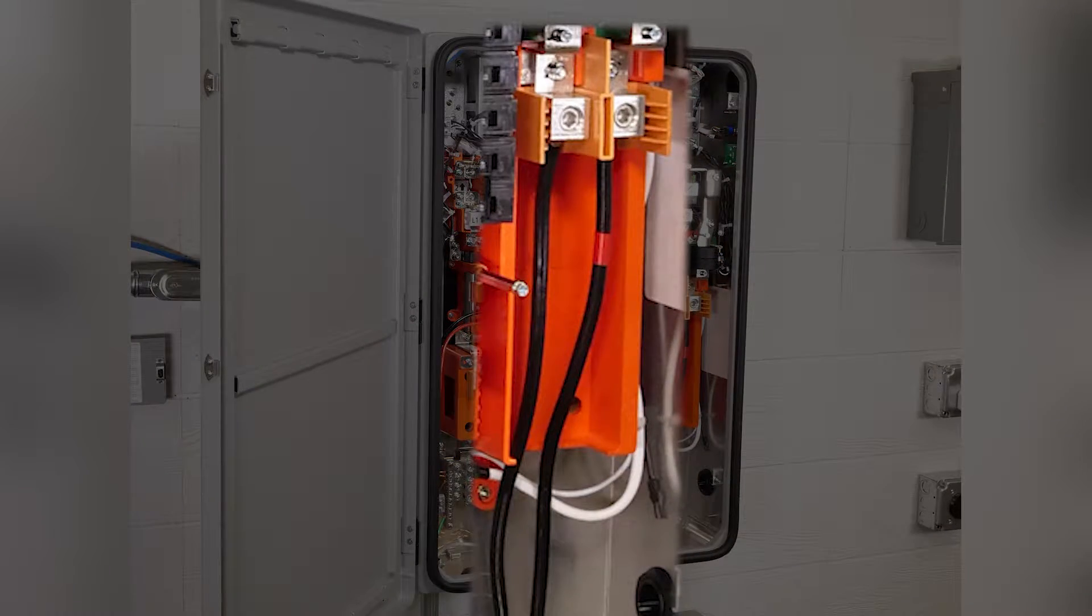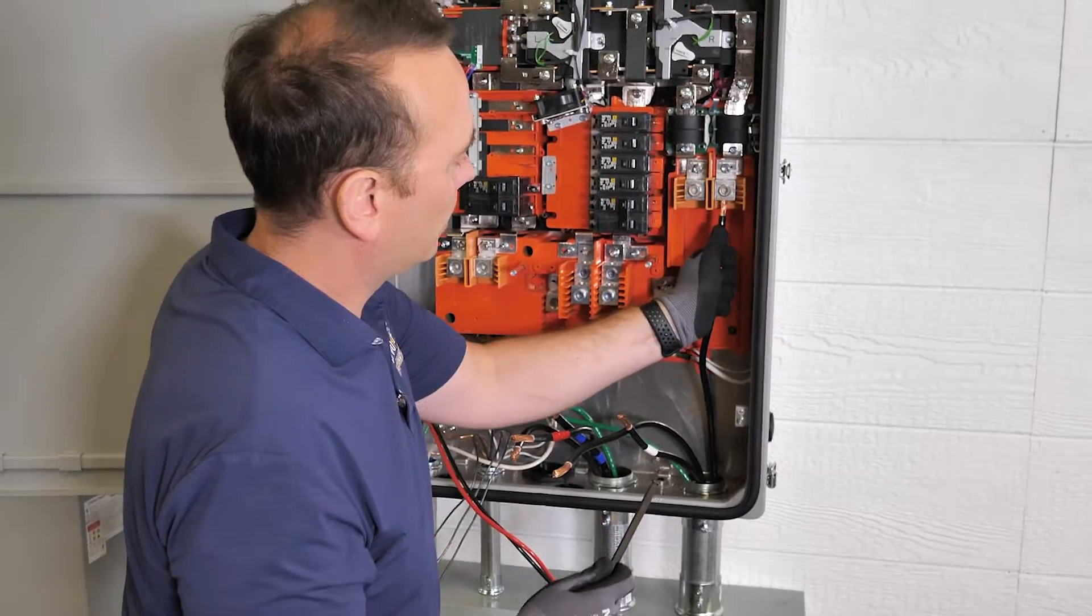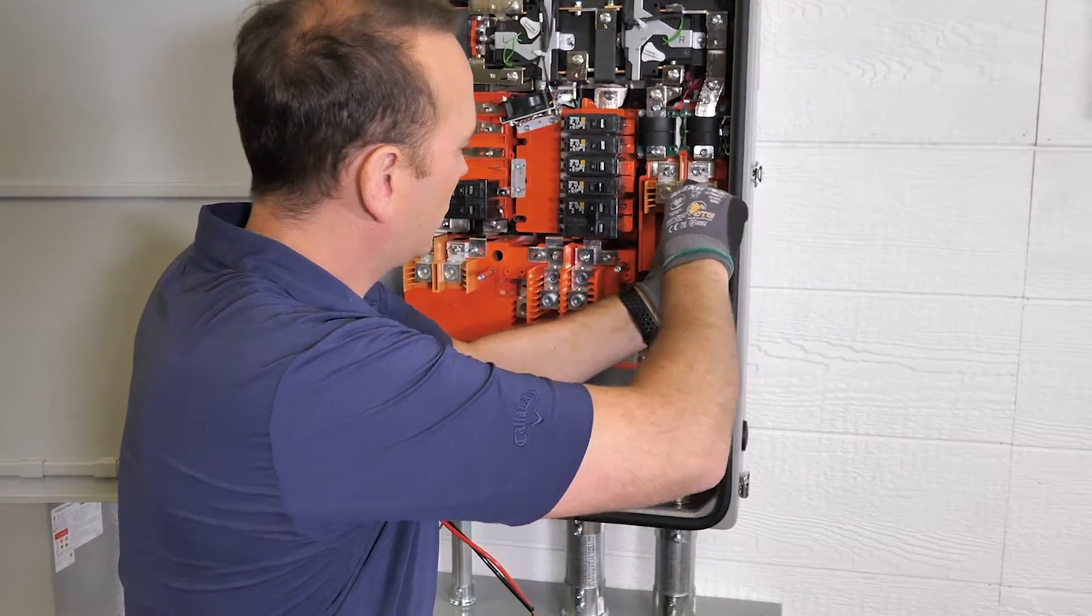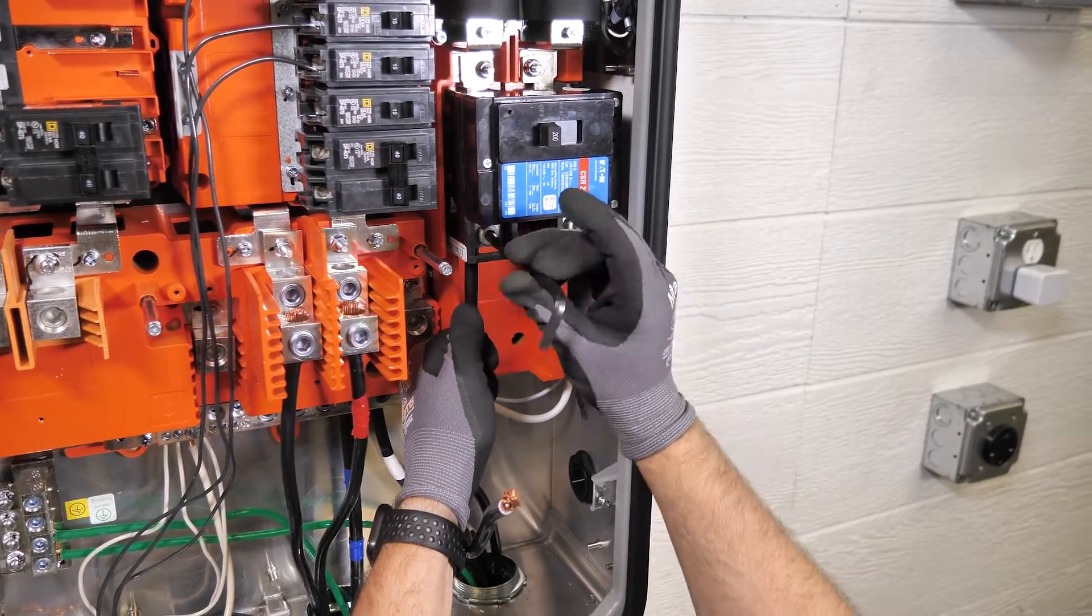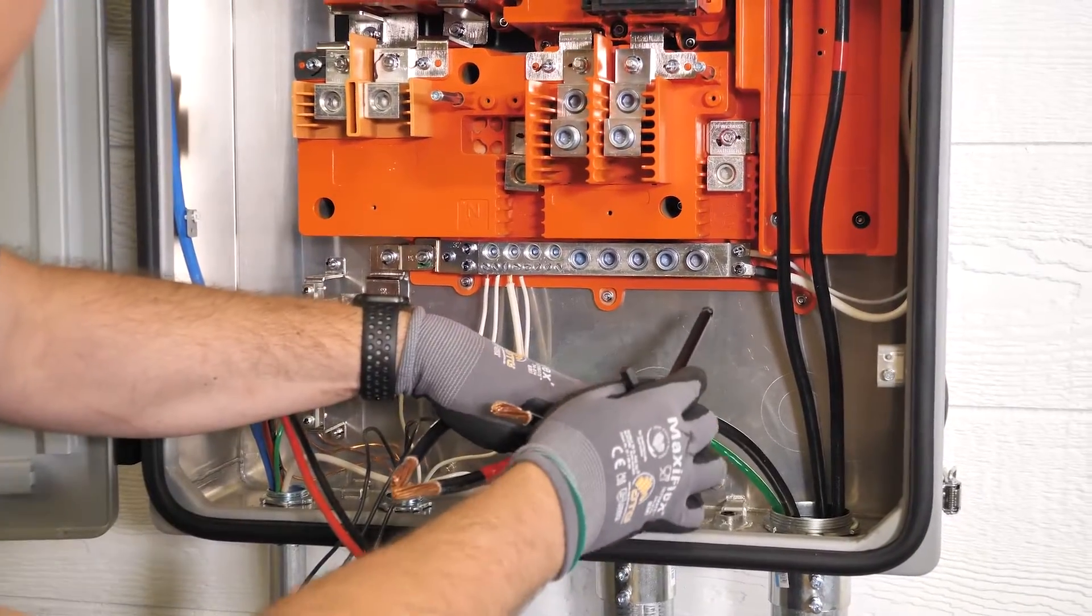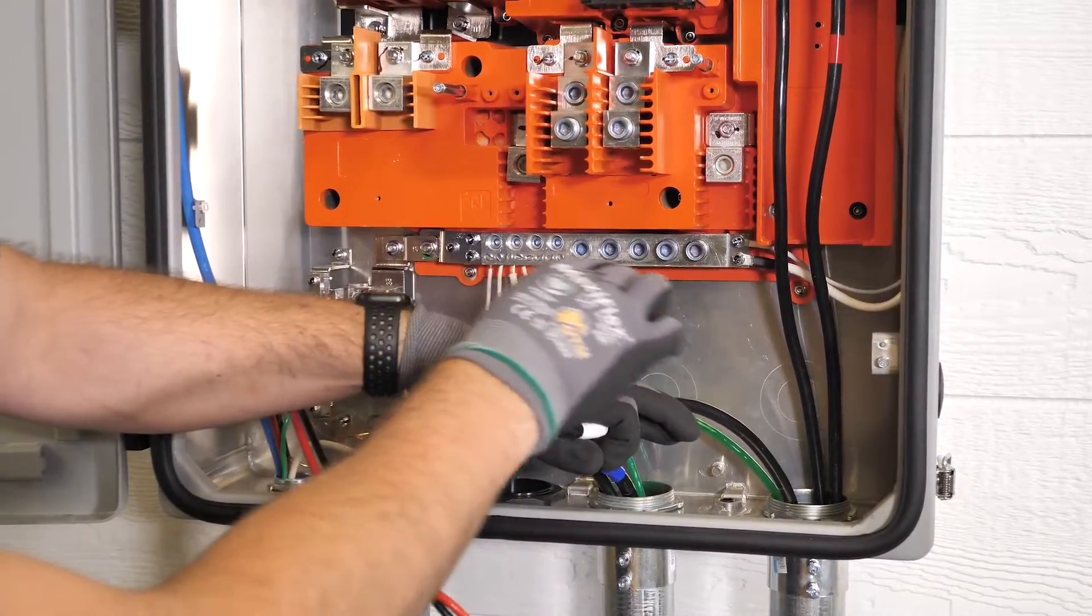Connect the grid input wires to the grid terminals on the smart box. The grid neutral we landed on the neutral bus bar which is located down below.